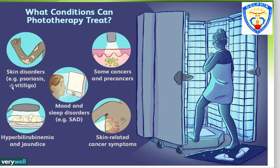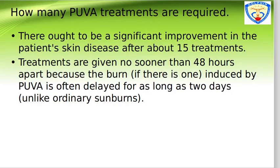PUVA can be used for various skin disorders such as psoriasis, vitiligo, cancerous and precancerous conditions, skin-related cancer symptoms, hyperbilirubinemia and jaundice, and mood and sleep disorders.